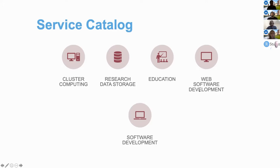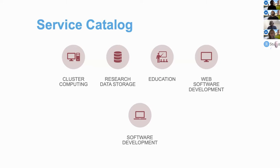Another component is web software development. In web software development, we aim to design and deploy custom web services that help simplify use of powerful HPC resources. One of the web applications I'm going to talk about today is on-demand.osc.edu, a web portal that enables users to access OSC and use HPC clusters easily through a web browser. Lastly, we have a scientific software development component — a dedicated team whose main function is to develop and deploy software that runs efficiently on large clusters, optimizing it to take advantage of parallel processes on OSC clusters.